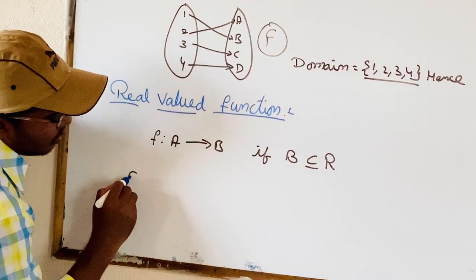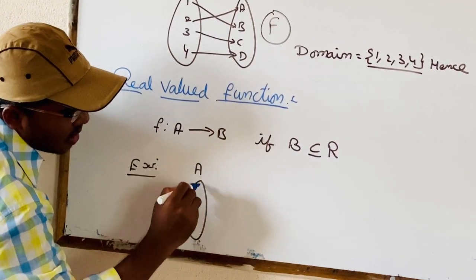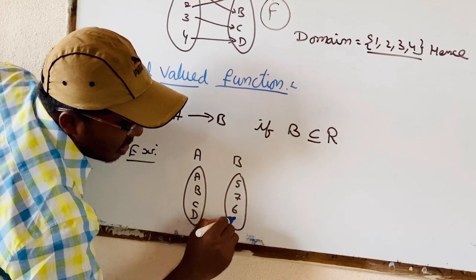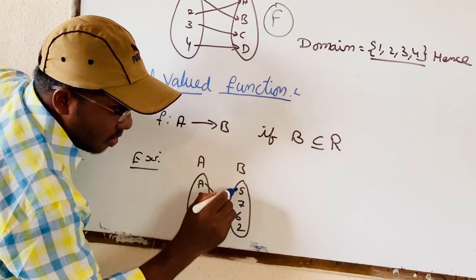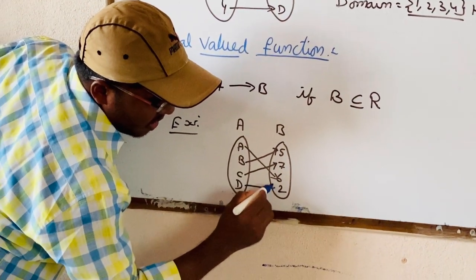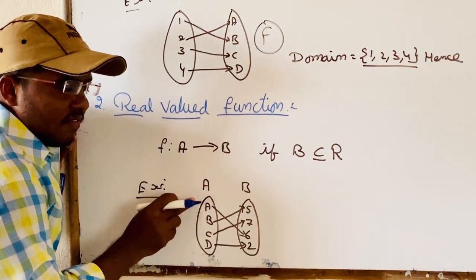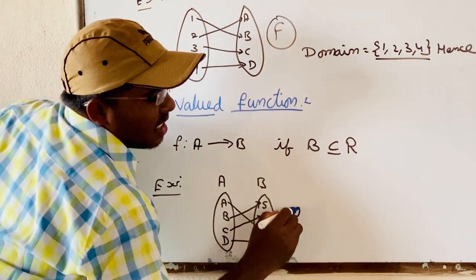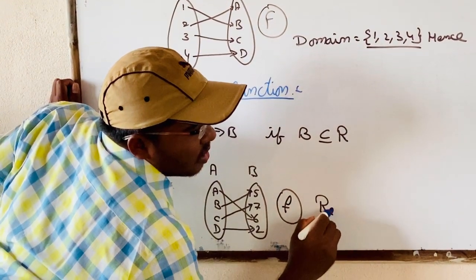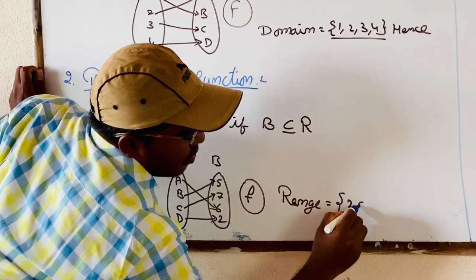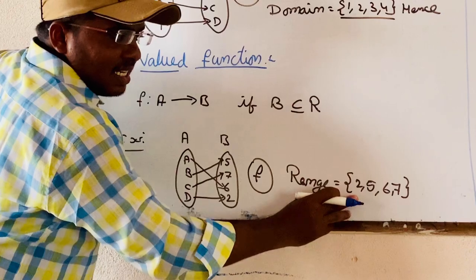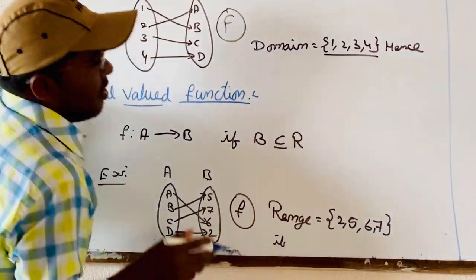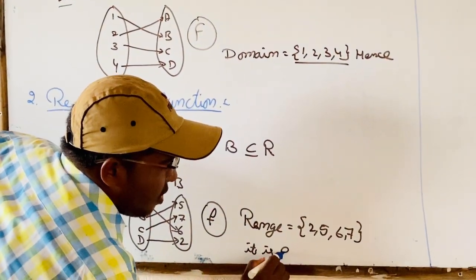For example, set A has elements A, B, C, D and set B has elements 5, 7, 6, 2. Here, A is related to 6, B is related to 5, C is related to 7, and D is related to 2. Every element of set A is related to exactly one element of set B, so it is a function. The range of this function is the set {2, 5, 6, 7}, which is a subset of real numbers. Hence, it is a real value function.